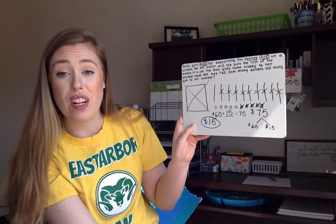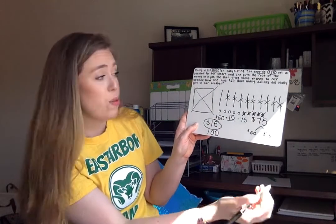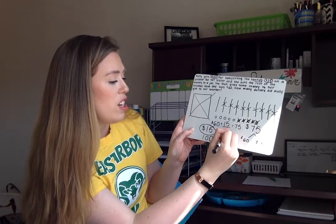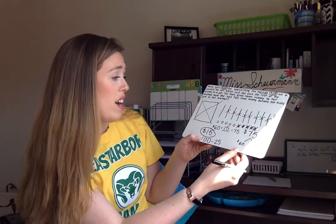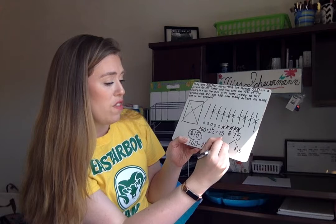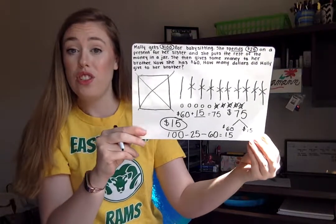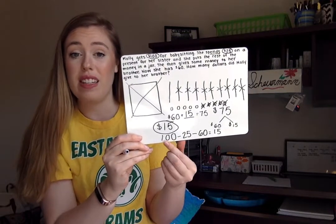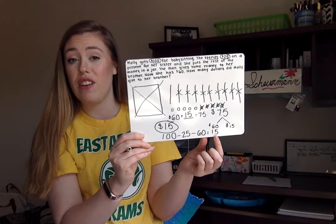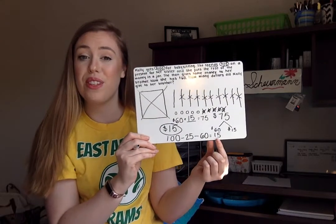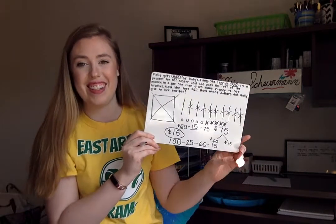Let's think about an overall equation that represents our work. We started with the $100 that she made from babysitting. Then we subtracted the $25 she spent on a present. Then we had to subtract the $60 that she kept to figure out that she must have given away $15. This problem had two different steps, both subtraction steps. We had to take $100 minus $25 minus $60 to find out how much she gave to her brother. The overall equation: $100 minus $25 minus $60 equals $15.